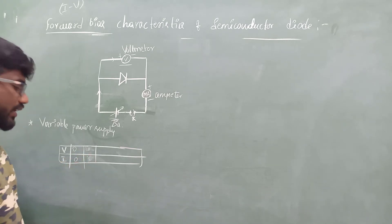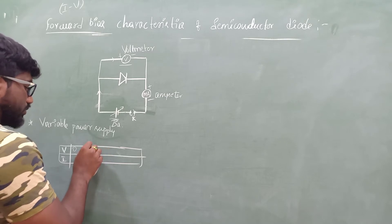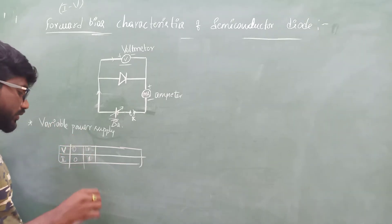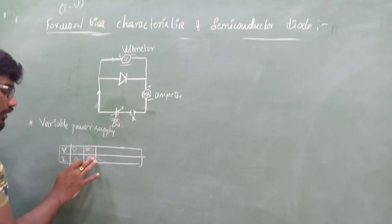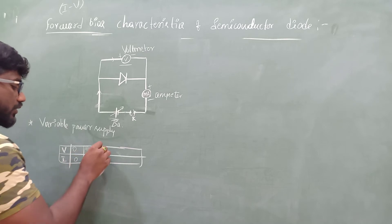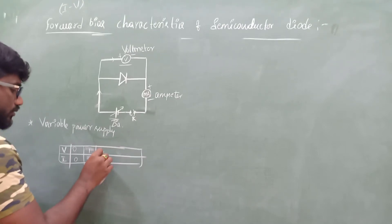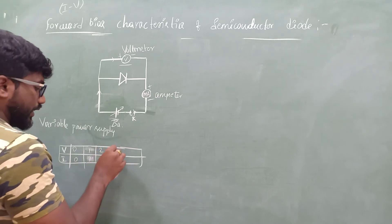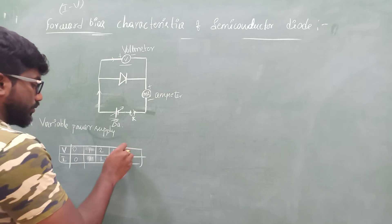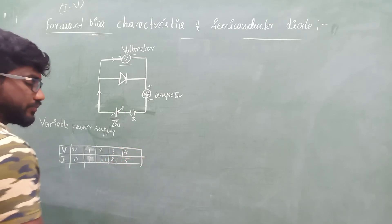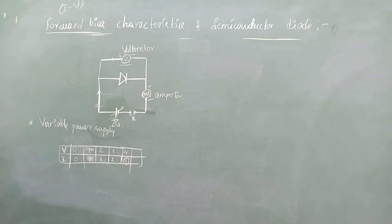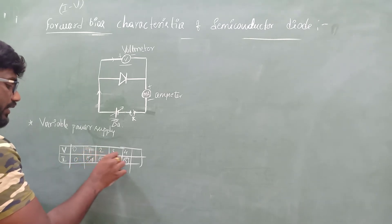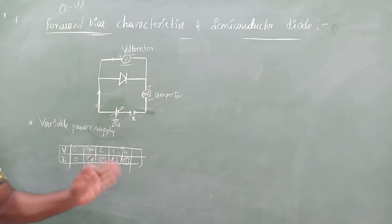Current will be in terms of milliampere, some small value. If voltage is 0.1, current is also very small — say 0.1. If you give 2V there is some current, maybe 1.5; at 3V maybe 1.2; at 4V some higher value; at 5V even higher. When voltage reaches around 4V the current value goes on increasing suddenly. Till a certain value of voltage — say 0.1, 0.2, 0.3 — the current barely changes.